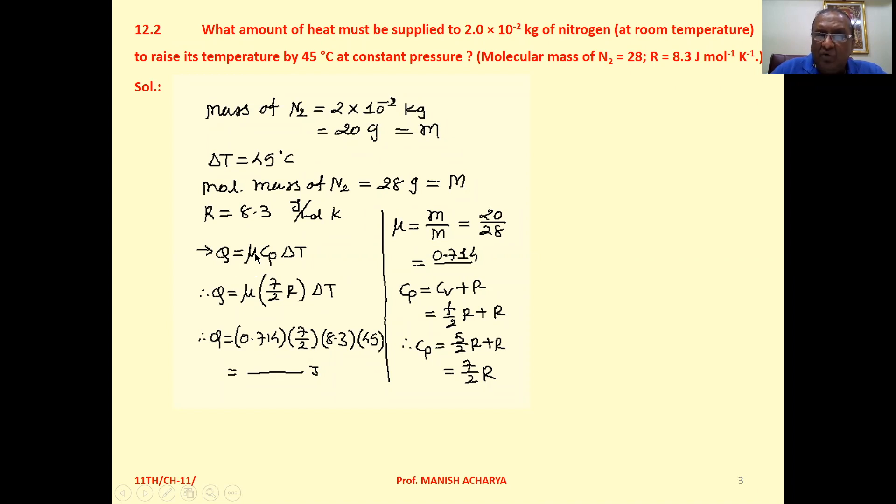So if μ number of moles are there, then μ times specific heat capacity. There are two: Cₚ and Cᵥ. But here it is given constant pressure, which means you have to take the specific heat capacity of gas at constant pressure, so Cₚ into ΔT.